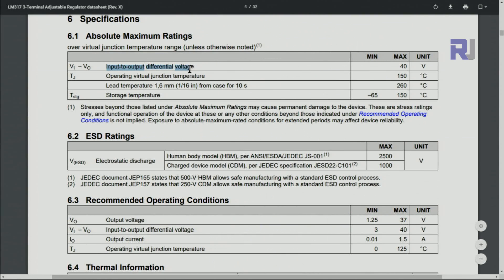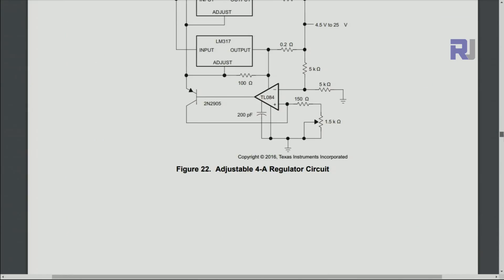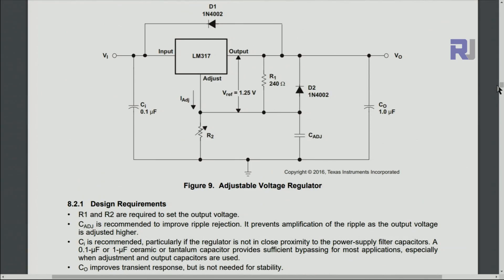Input to output difference can be up to 40 volts, the difference between input and output. These are the junction temperature types. I will provide the link, you can download this.